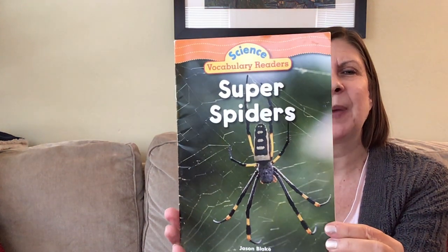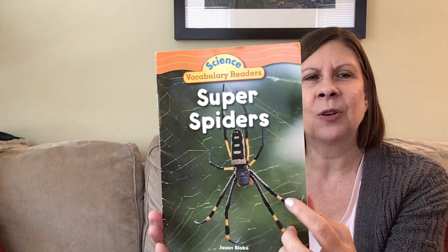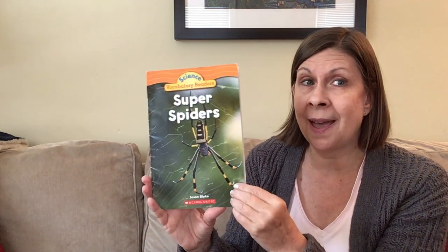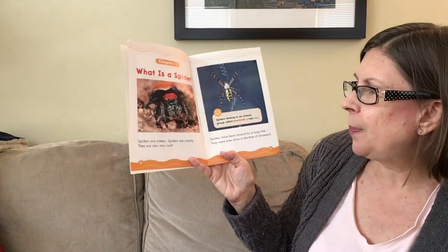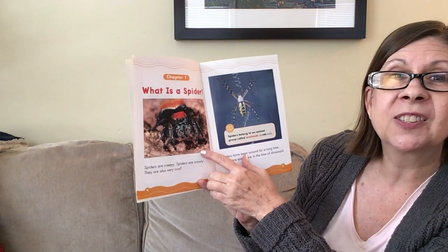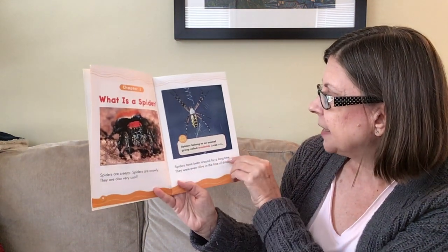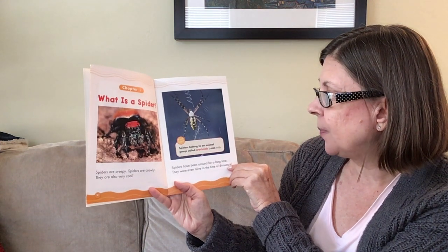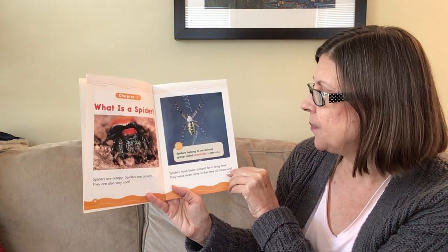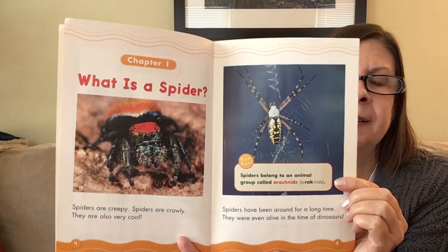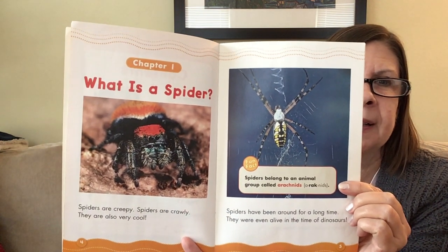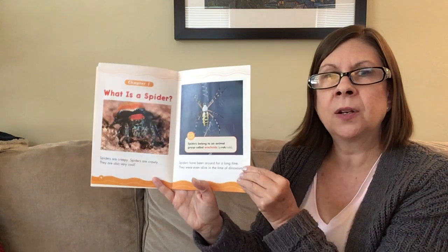That one's kind of an interesting spider — I see yellow stripes and lots of black. There are many different kinds of spiders. Spiders are creepy, spiders are crawly, they are also very cool. Spiders have been around for a long time; they were even alive in the time of the dinosaurs. Spiders belong to an animal group called arachnids, so they're not insects like ladybugs or ants or flies.